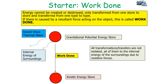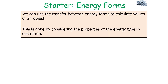However, if there's an open system, you will have some energy go to the internal energy of the surroundings, because all transformations and transfers are not isolated — they exist in open systems. As such, all of them will transfer energy to the internal energy of the surroundings due to resistive forces. We can use the transfer between energy forms to calculate values of an object by considering the properties of the energy type in each form.